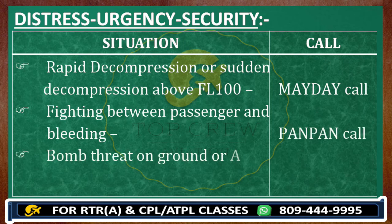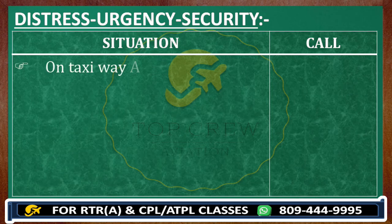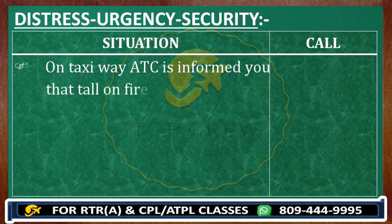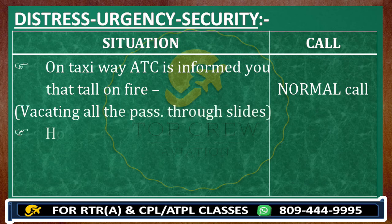If you are on the ground with a bomb threat, you have to taxi to the isolated bay. On the taxiway, if ATC informs you that the tail is on fire, it would normally be a Pan Pan call.